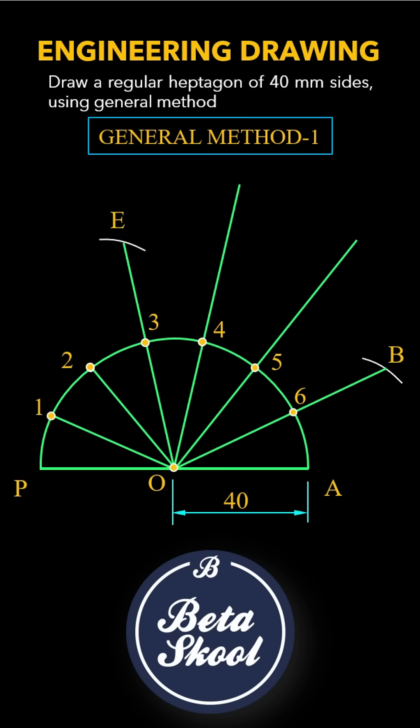Next, with center B and radius OA, draw an arc to extended line O5. Mark the intersection as point C. Likewise, with center E and radius OA, draw an arc to extended line O4. Mark the intersection as point D.